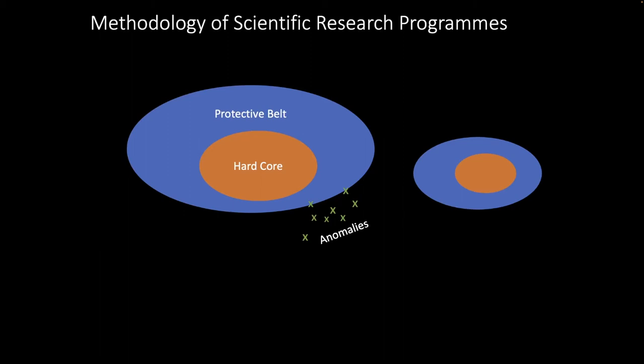Or a research program could be progressing. That means that it is growing, it is covering more phenomena that were not previously explained. It is making modifications in response to anomalies, but those modifications increase rather than sort of decrease the novel predictive content of the theory or the research program.